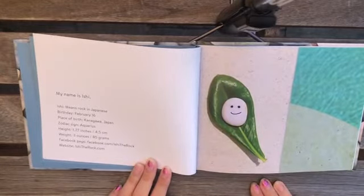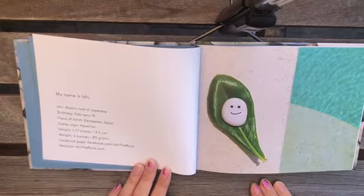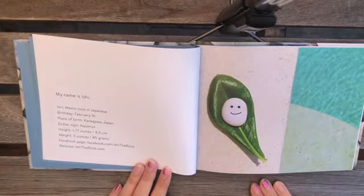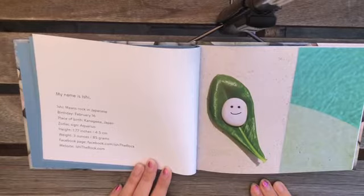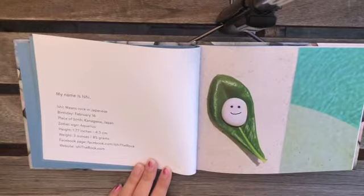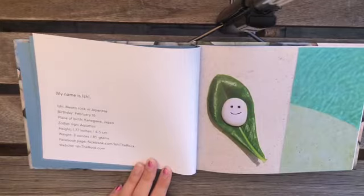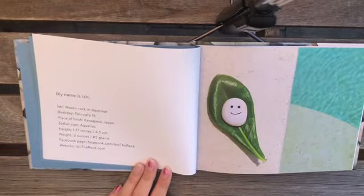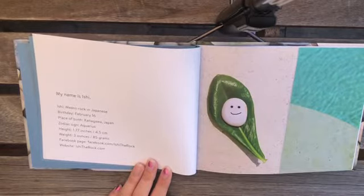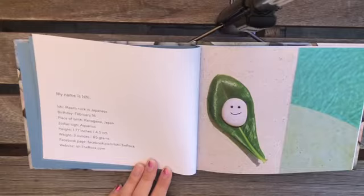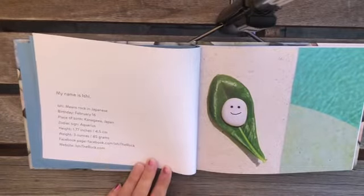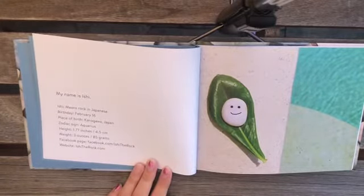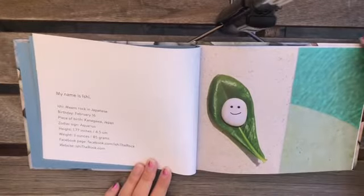My name is Ishii. Ishii means rock in Japanese. His birthday is February 16th, and he was born in Kanagawa, Japan. His zodiac sign is Aquarius. He is 1.77 inches and 4.5 centimeters tall. He is 3 ounces and 85 grams in weight. And this is his Facebook page and website, which you can actually visit if you want to find out more about Ishii and his story.